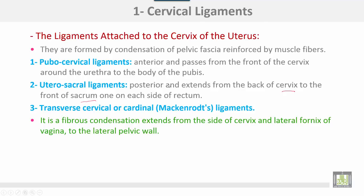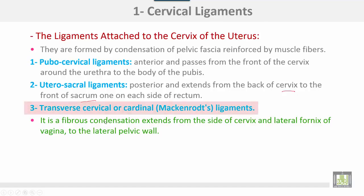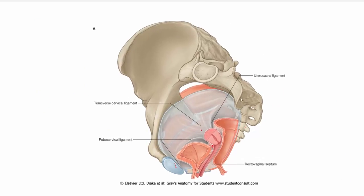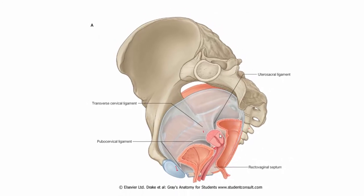The cervical ligaments are attached to the cervix of the uterus and formed by condensation of the pelvic fascia reinforced by muscle fibers. The pubocervical ligament is anterior and passes from the front of the cervix around the urethra to the body of the pubis. The utero-sacral ligaments are posterior and extend from the back of the cervix to the front of the sacrum, one on each side of the rectum. The transverse cervical, or cardinal, or Mackenrodt's ligaments are a fibrous condensation extending from the side of the cervix and the lateral fornix of the vagina to the lateral pelvic wall.